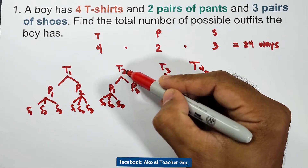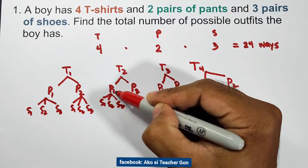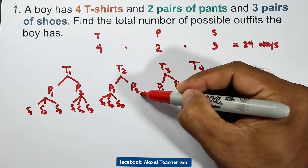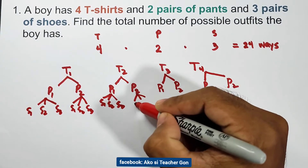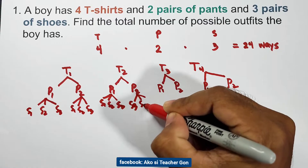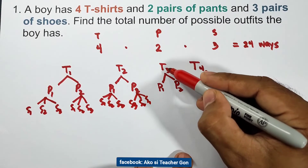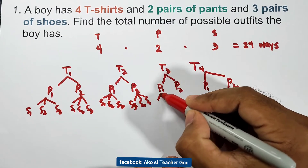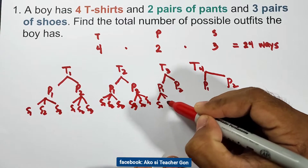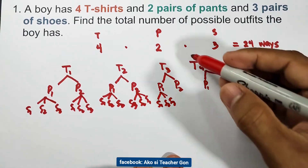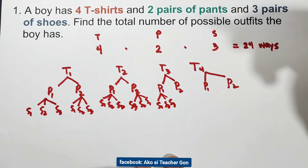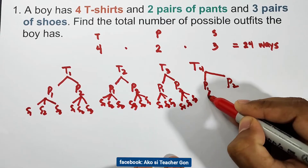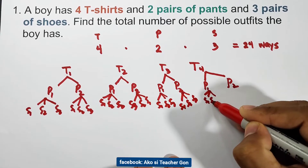For the second t-shirt with the first pants, we can also pair the three pairs of shoes. For the second t-shirt with the second pants, we again pair s1, s2, and s3. The same applies for the third and fourth t-shirts — each paired with p1 and p2 connects to s1, s2, and s3.